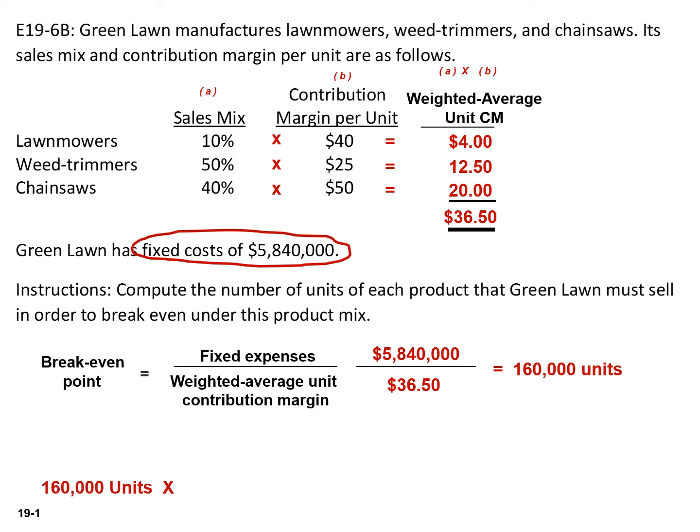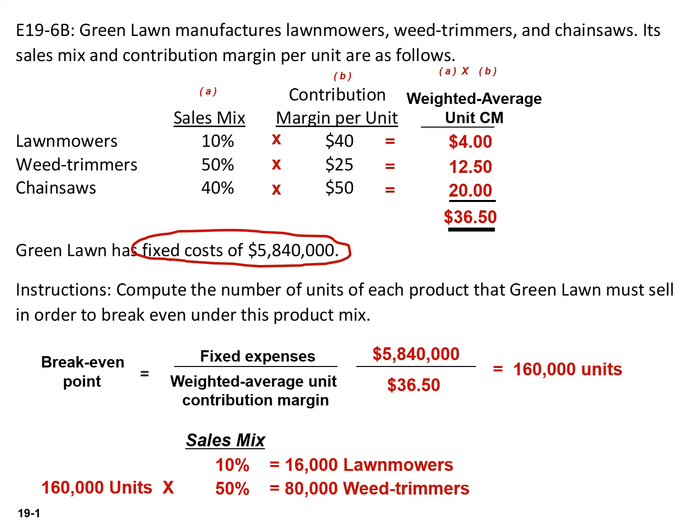The last thing that we need to do is take that breakeven point in units and multiply by the sales mix. If our sales mix for lawn mowers is 10%, then we need to sell 16,000 lawn mowers, 80,000 wheat trimmers, and 64,000 chainsaws to breakeven.